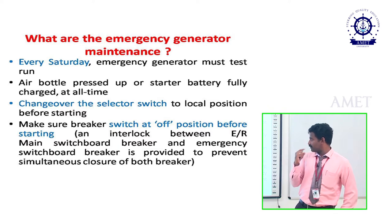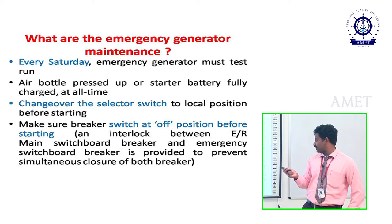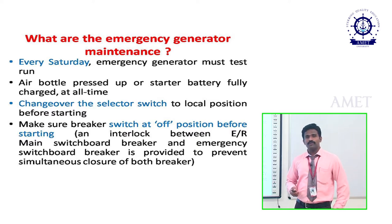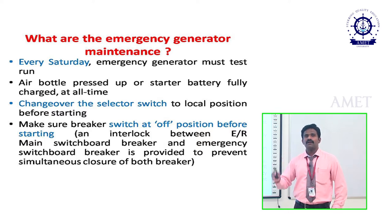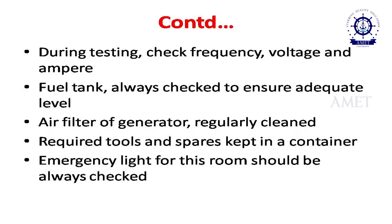Before testing the emergency generator, we must change over the switch from the main switchboard. Also, make sure the breaker switch is in the off position before starting. The interlock between the main switchboard breaker and the emergency switchboard breaker is provided to prevent the simultaneous closure of both breakers. Before going to test the emergency generator on Saturday, we must switch off the starting interlock switch, then after switching on we can check the voltage, frequency, and ampere rating.